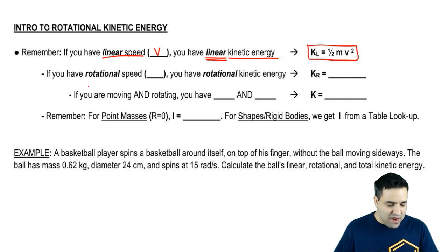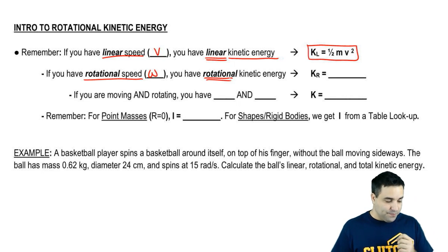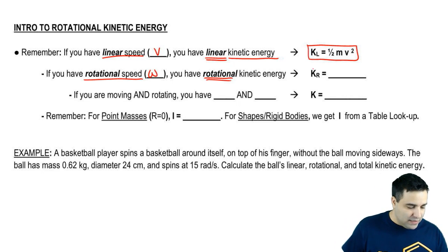And that's because now we have a new one, which is if you have rotational speed, instead of V it's omega, you have rotational kinetic energy. And instead of KL, we call it Kr.